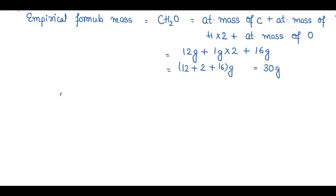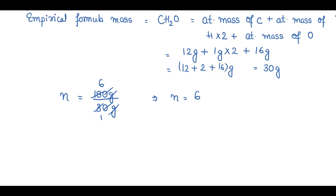Now we find N: N = molecular mass / empirical formula mass = 180g / 30g. Cancelling the units, 180 divided by 30 gives us N = 6.